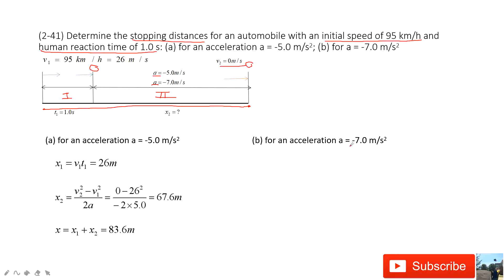Similarly, for acceleration is negative 7 meter per second square, we look at part 1. It moves at a constant speed v1. We can get x1. And in x2, we still have initial velocity and final velocity. We can get x2 in this equation. And x1 plus x2, we get the stopping distance.